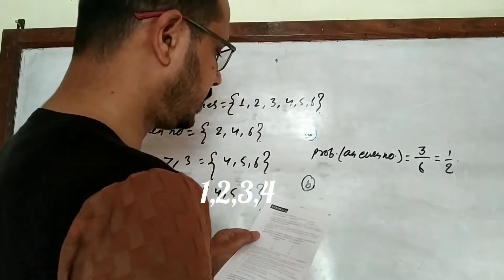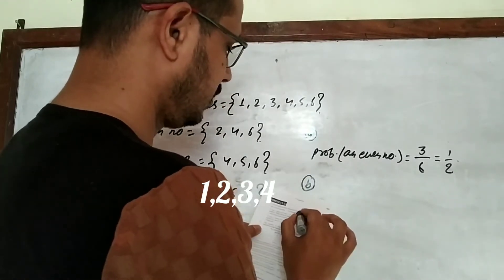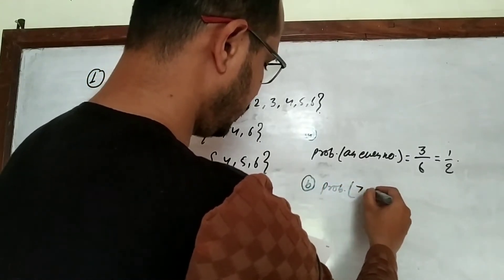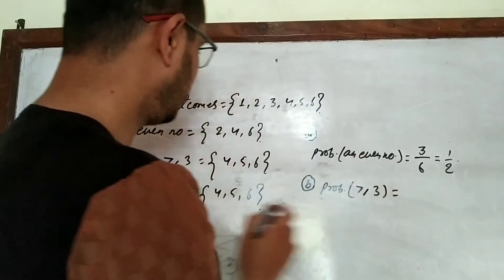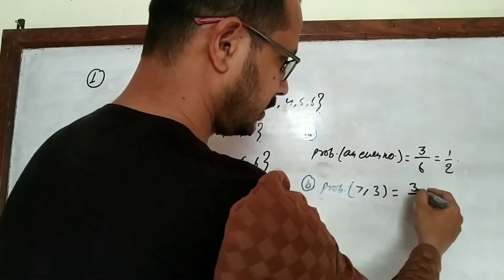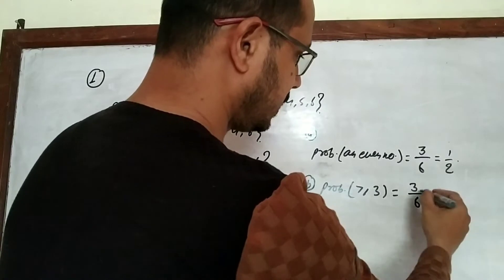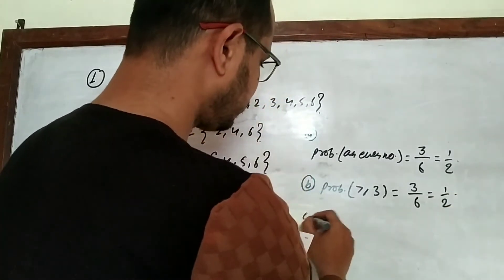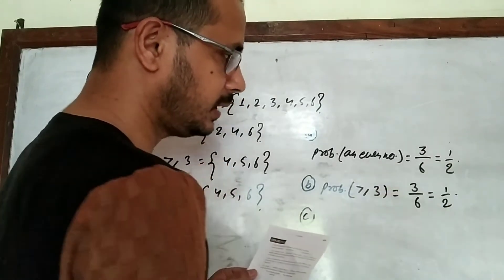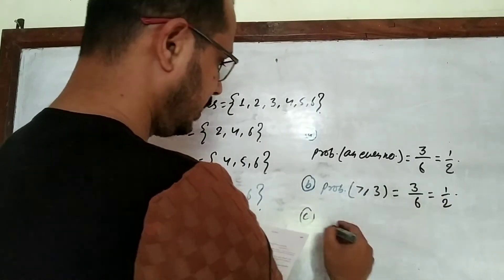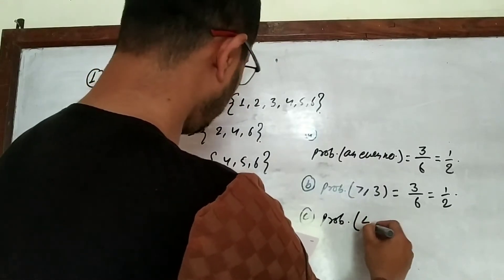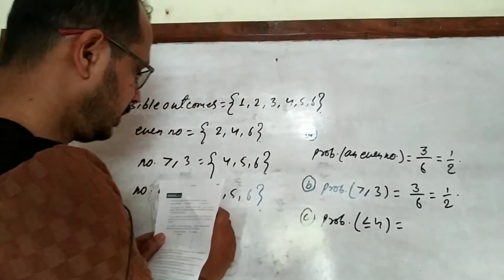For part (b), a number more than or equal to three: we need 3, 4, 5, or 6 — wait, four or five or six — giving 3 favorable outcomes out of 6 possible outcomes, so the probability is 3/6 = 1/2.